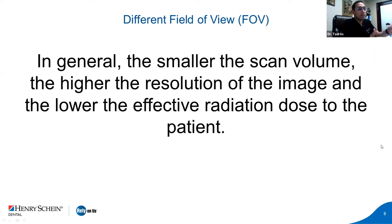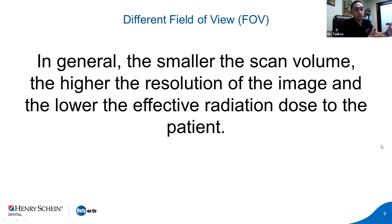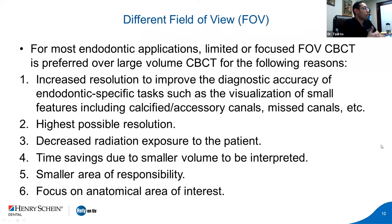In general, the smaller the scan, the smaller the view, the higher the resolution, and the lower the effective radiation dose. So if you want to image a small structure, you want to have a smaller field of view and smaller scan volume — you'll get higher resolution and lower radiation compared to a bigger field. That's what takes me to why and how we use CBCT in endodontics. For endo, a limited or focused FOV of CBCT is definitely preferred over large volume. For endo, you are focusing on one or two teeth and looking at anatomical areas around one particular area, so you don't really need a big field.